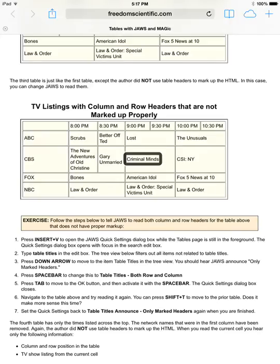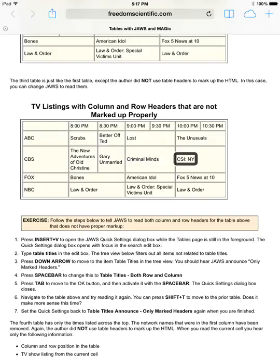The next table has the name of the network down the left side and show times across the top, but this table is not marked up with table header data — no row or column headers at all. So as we cycle through the cells, we don't hear that header information.